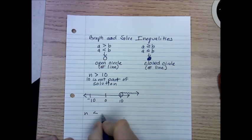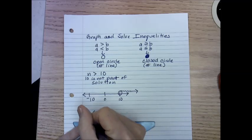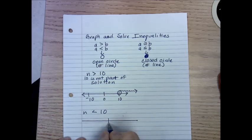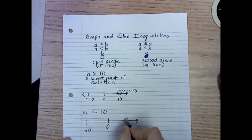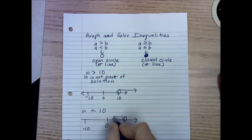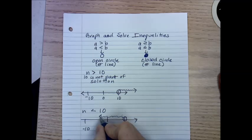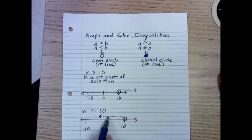If we have N is less than 10, it would be the opposite. Again, 10 is not part of the solution, so we use an open circle. In this case, the arrow would go to the left, because the numbers that substitute for N are less than 10, and the numbers on the number line less than 10 go to the left.